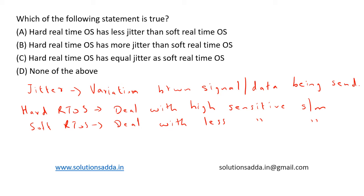So based on the definition of hard real-time OS and soft real-time OS, we can say that the jitter should be lesser in hard real-time OS than in soft real-time OS, because hard real-time OS deals with sensitive systems and requires strict deadlines — some examples include satellite launching and engine control systems. Whereas for soft real-time OS, it does not require strict timing constraints and a bit of delay between the data being sent is acceptable. So hard real-time OS requires less jitter compared to soft real-time OS, and option A is the correct answer.